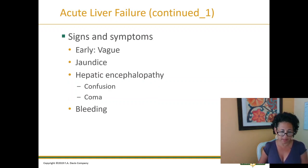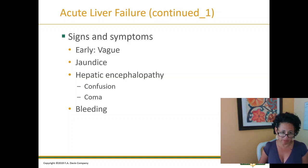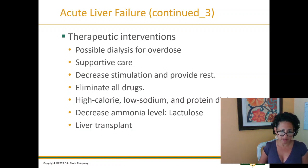Acute liver failure signs and symptoms include jaundice — there's a great illustration on page 696, Figure 35.1 — hepatic encephalopathy, confusion or coma, and bleeding. These can affect the brain. Serum blood tests are used for diagnostic confirmation. Therapeutic interventions follow.